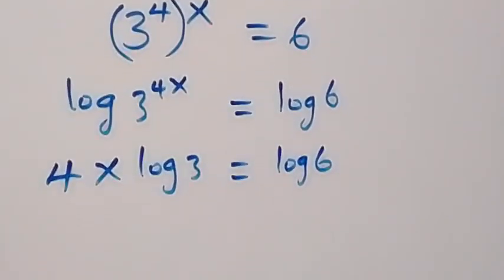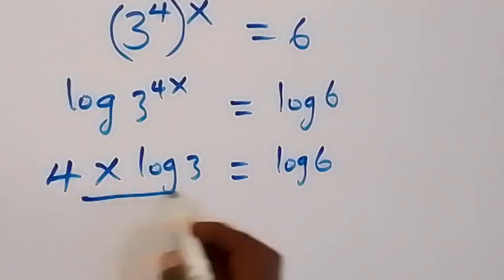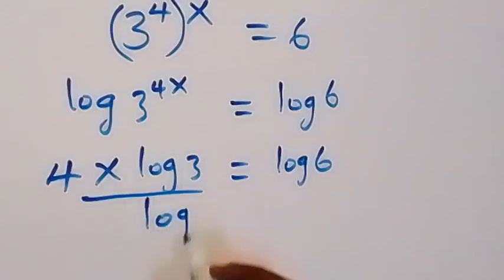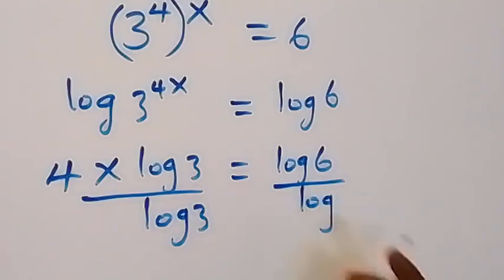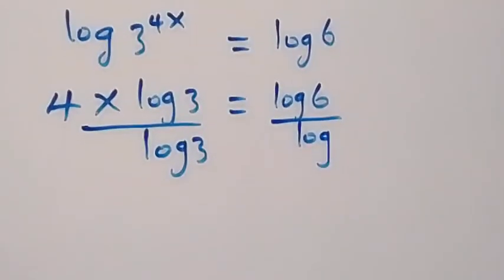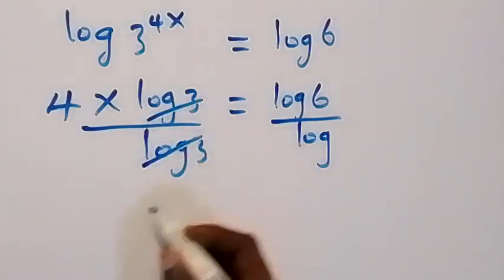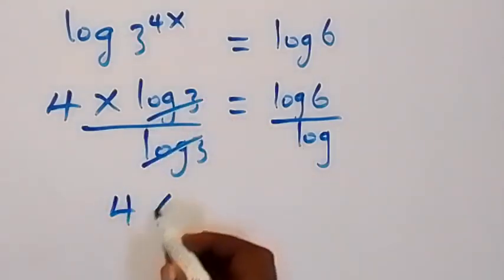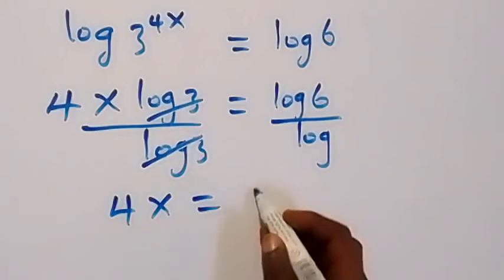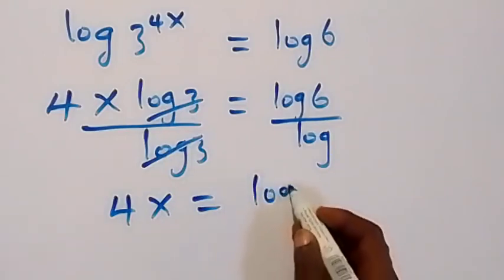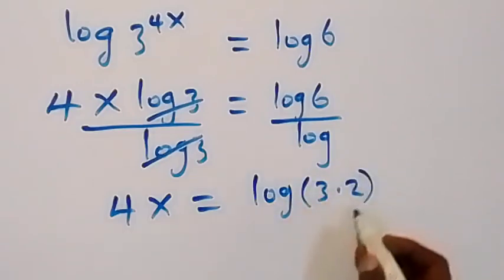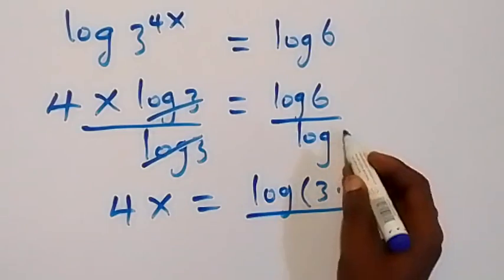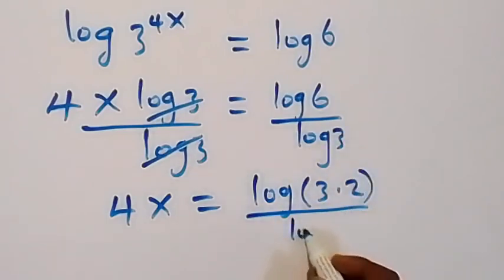Next step, let's divide both sides by log 3 — this side divided by log 3 and also this side divided by log 3. The log 3 terms cancel each other, and we are left with 4x equals log 6 over log 3. We can write log 6 as log of 3 times 2, then over log 3.